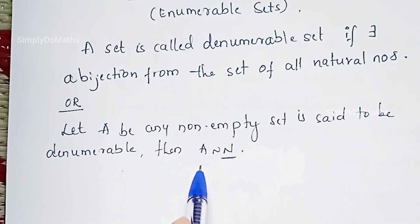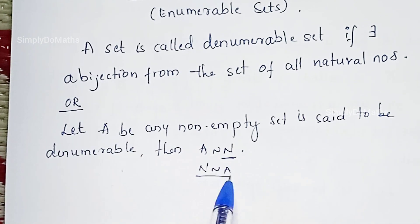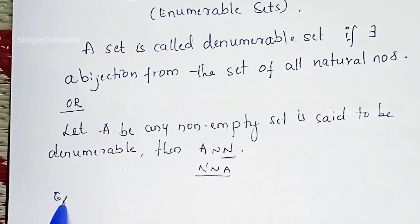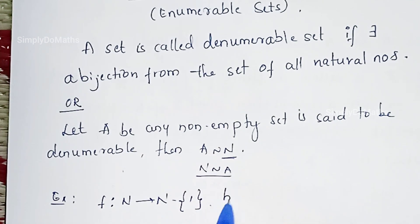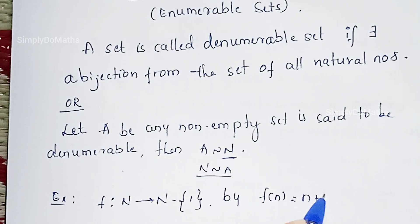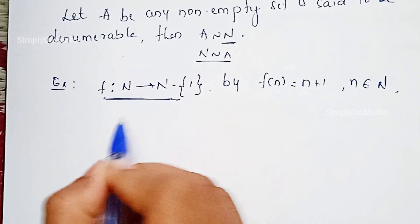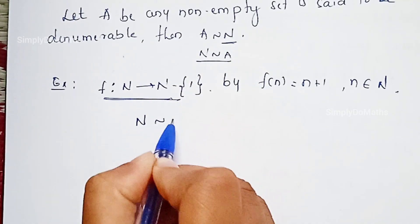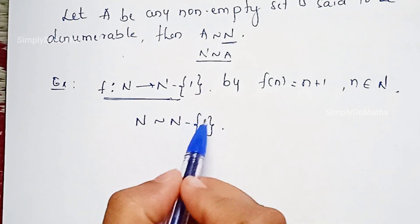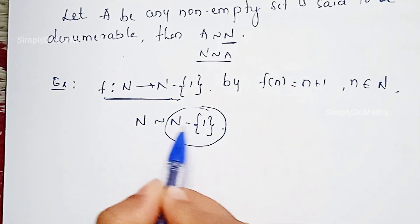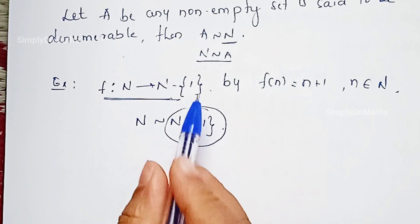Let's go with an example. Consider a function f from N to N minus the singleton set {1}, defined by f(n) = n + 1, where n belongs to N. Then we can directly say that N is equivalent to N minus {1}. Therefore, the set N minus {1} is a denumerable set.